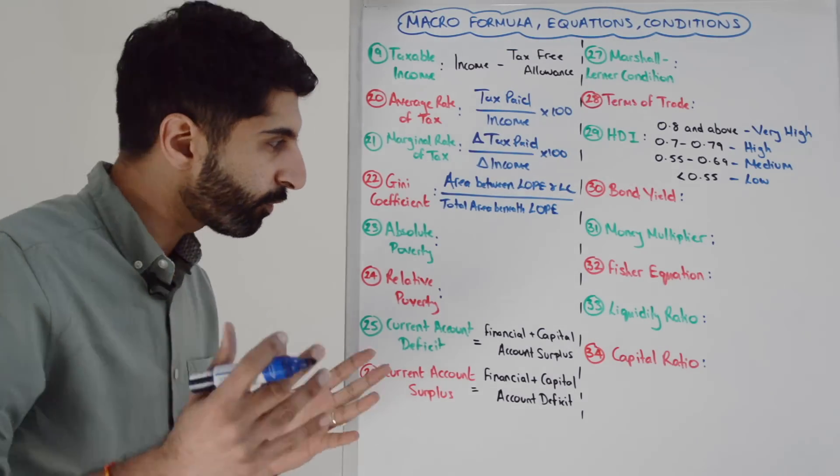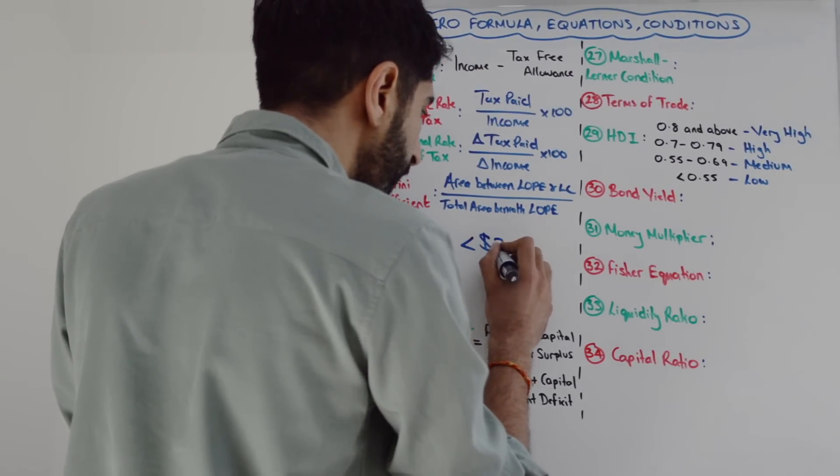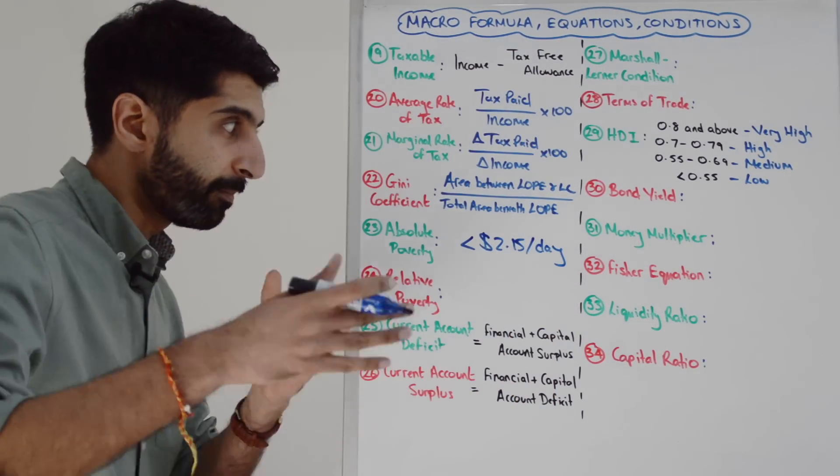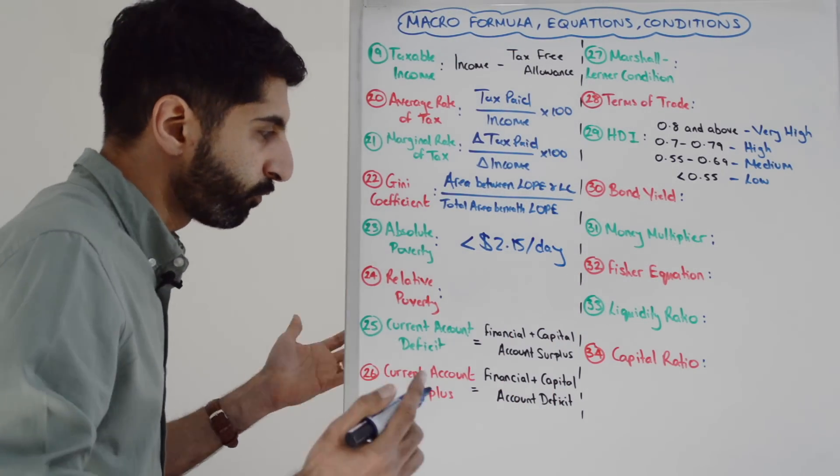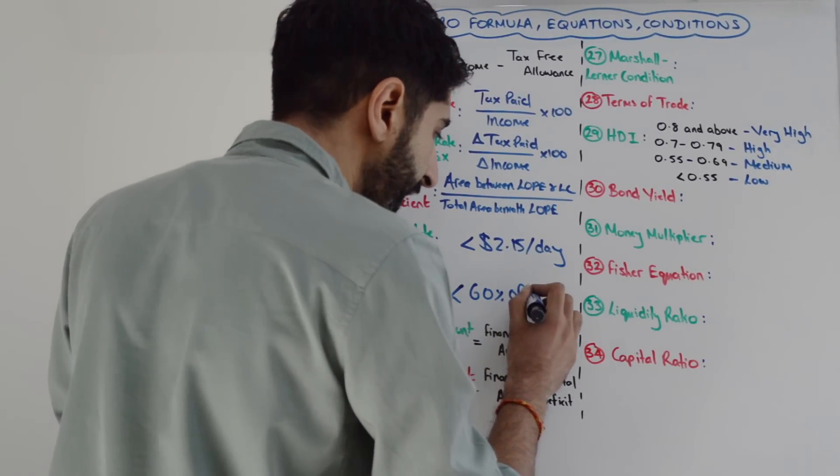Absolute poverty nowadays world-renowned is defined as income less than $2.15 a day - you're operating beneath the poverty line. Relative poverty is when income earned is less than 60% of the median income. If you're earning less than 60% of the median income, you're in relative poverty.